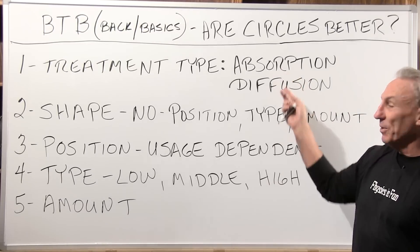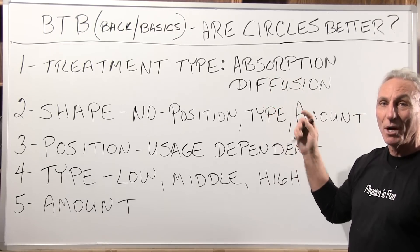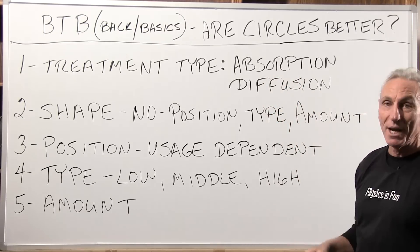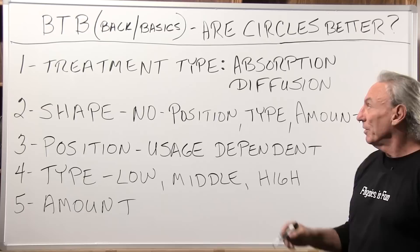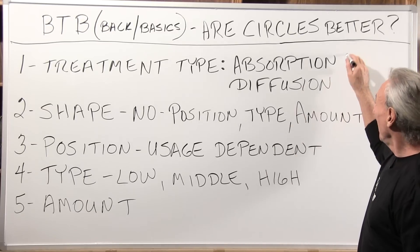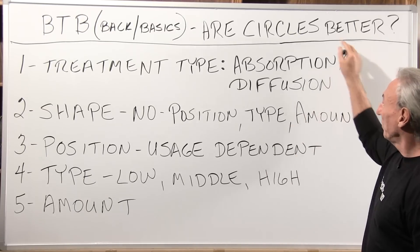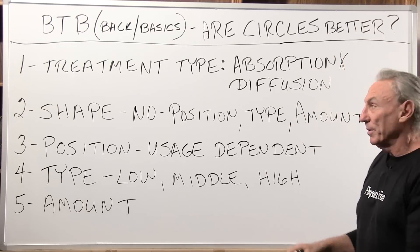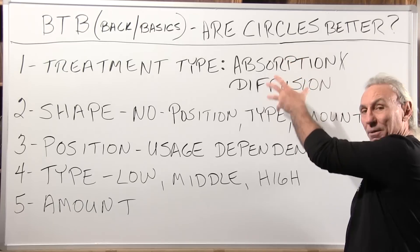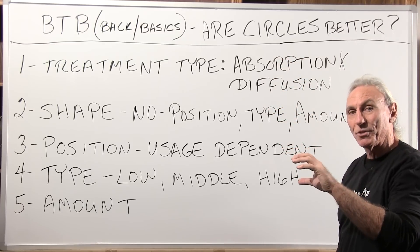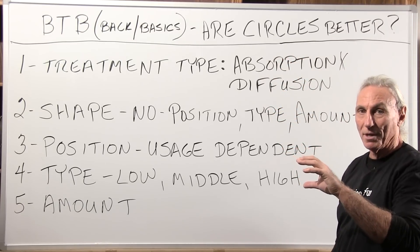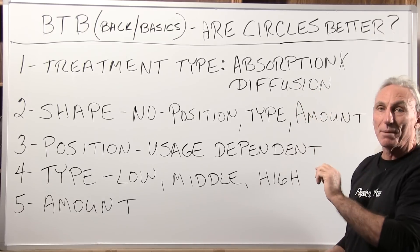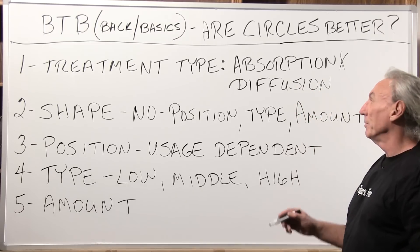We only have two types that our laws of physics let us use: absorption and diffusion. So mainly these shapes come up because people are confusing absorption and diffusion technologies together. We want to be very careful and separate those two.